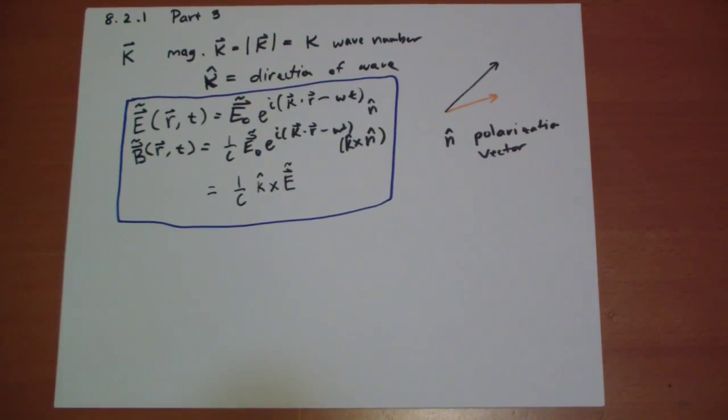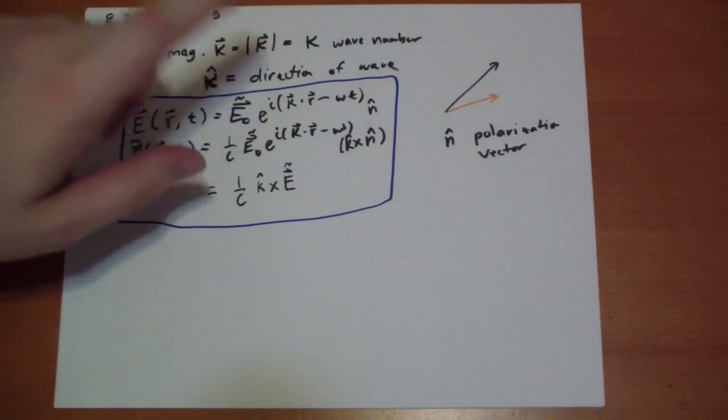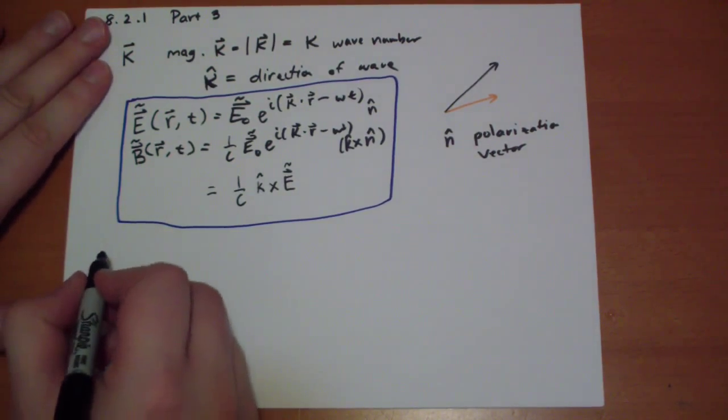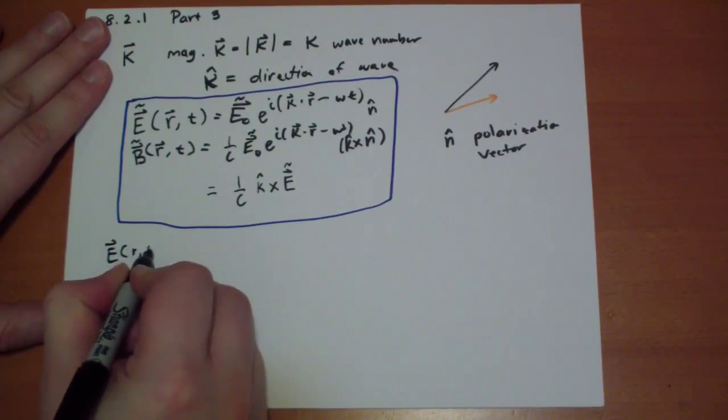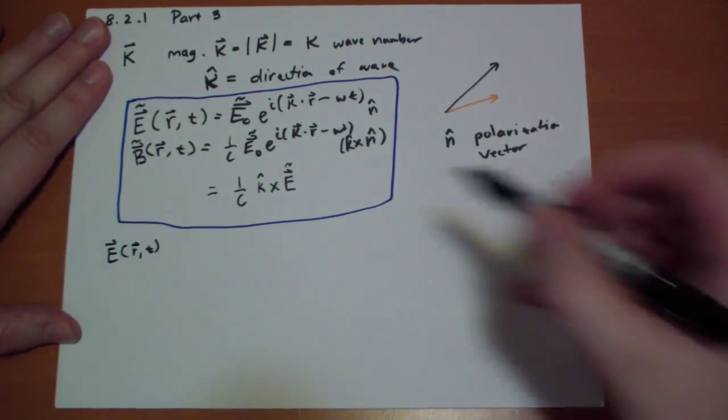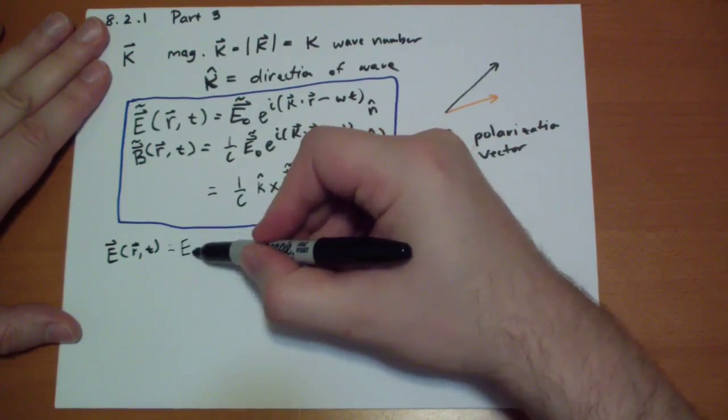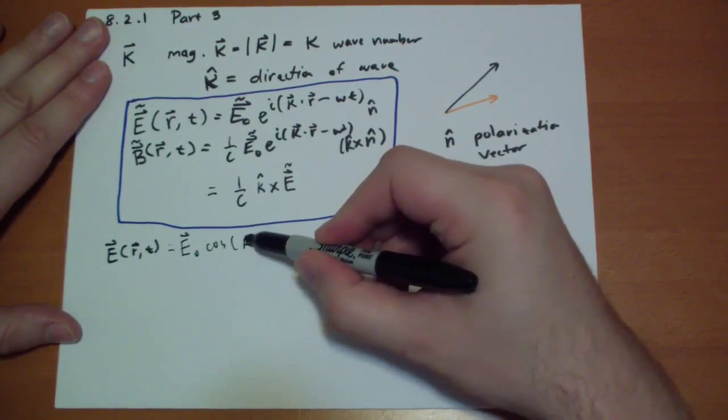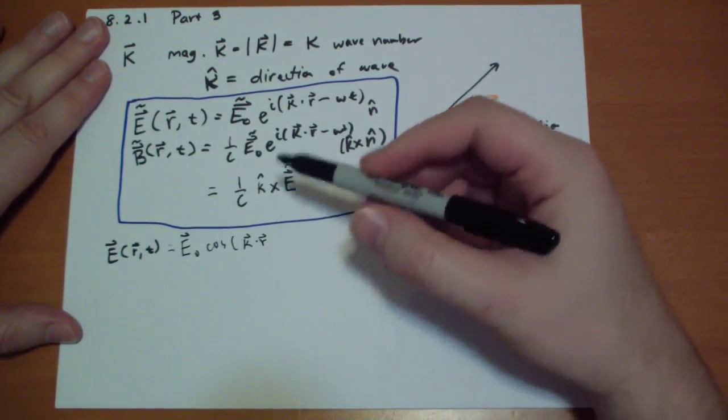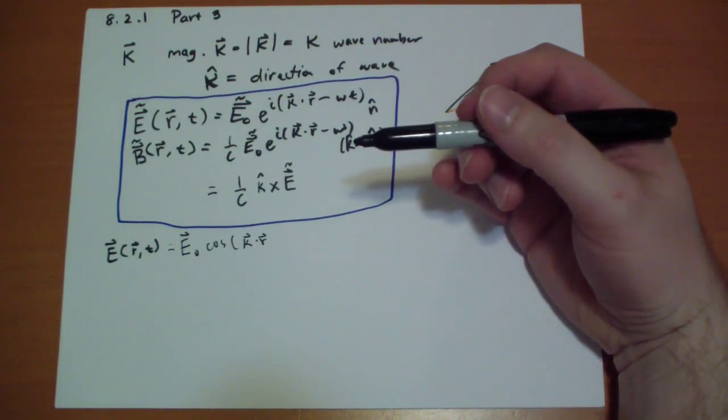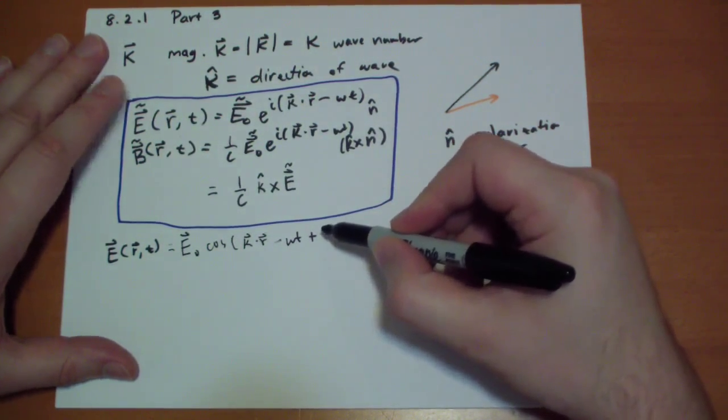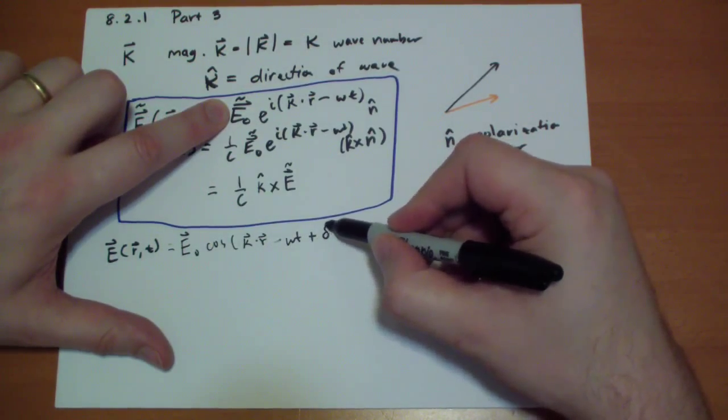If this complex number is driving you nuts, then you just take the real of all that stuff, and remember the real of e to the i something is just cosine of that something. So we have E vector that has to be equal to E-naught vector times cosine of K vector dot R vector, double check that I'm not kidding you here, minus omega t plus the delta that came from this complex.